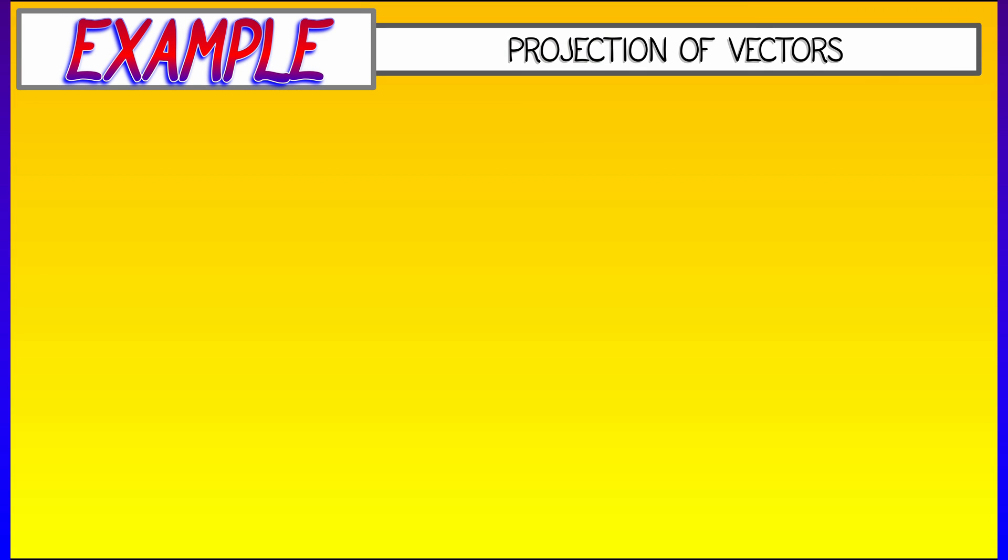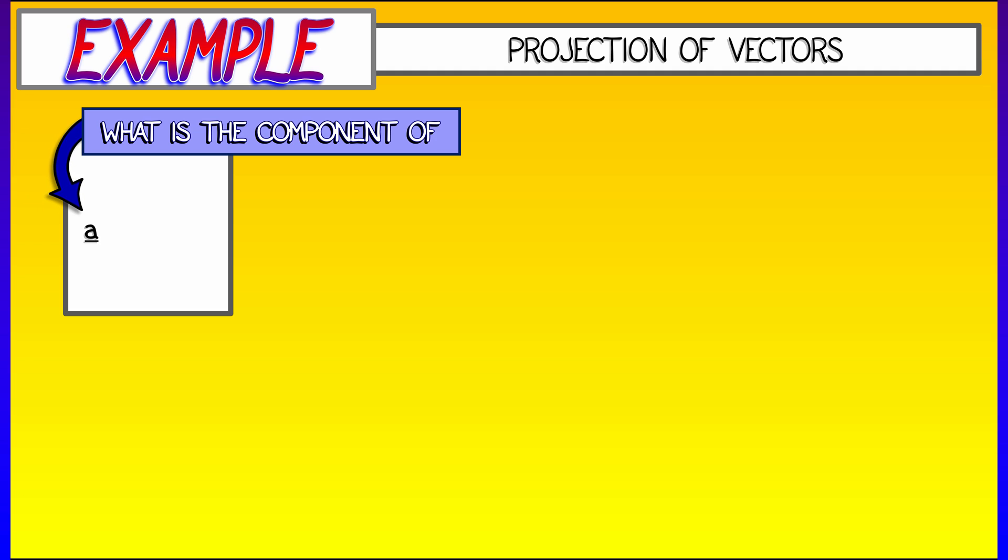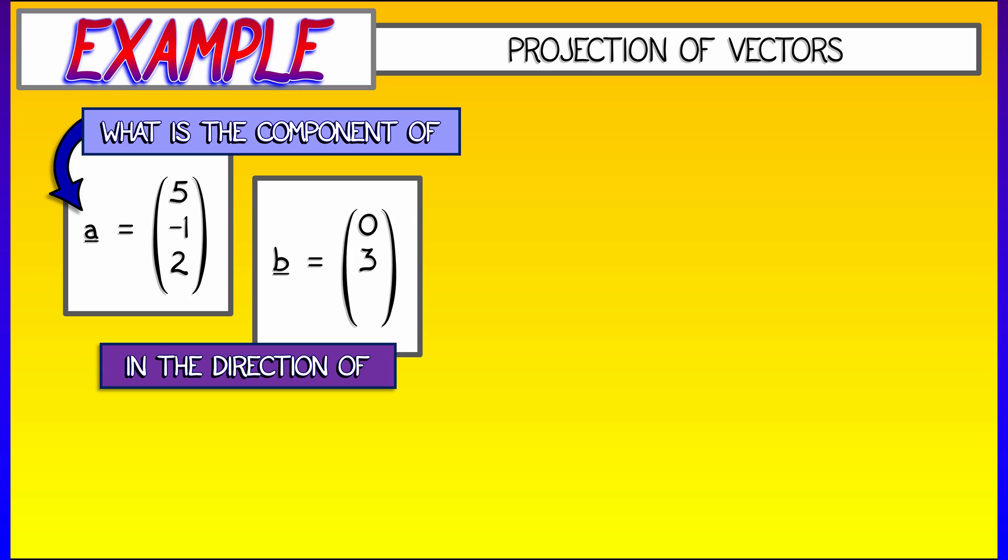Here's a simple example. What is the component of the vector a given with components five, negative one, and two in the direction of the vector b with components zero, three, and negative four?